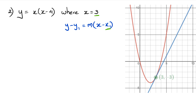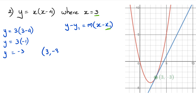So our first step is to figure out what the y value is. To do that, we're going to substitute x into the original equation. So we get y equals 3 times (3 minus 4), which gives y equals 3 times negative 1, which equals negative 3. So the coordinate we're working with is (3, negative 3), and you can actually see that as the green dot on the graph.